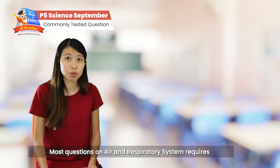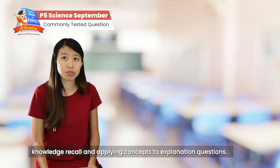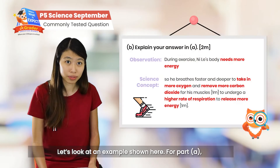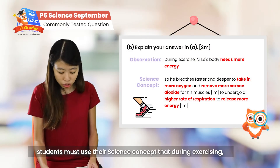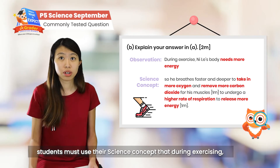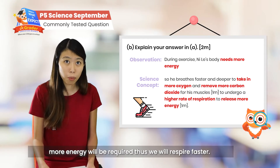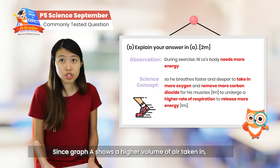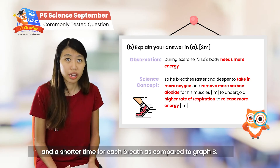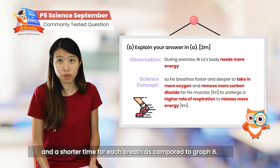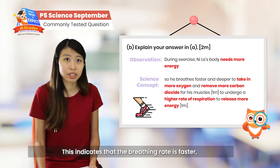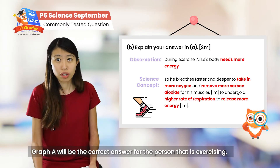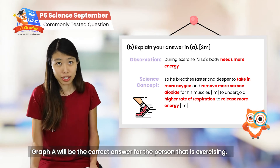Most questions on air and the respiratory system require knowledge recall and applying concepts to explanation questions. For Part A, students have to use their science concept that during exercising, more energy will be required, so we will respire faster. Since graph A shows a higher volume of air taken in and it actually took a shorter time for one breath compared to graph B, it indicates that the breathing rate is faster, resulting in faster respiration. So graph A will be the correct answer for the person that is exercising.